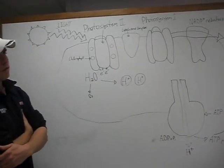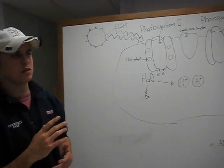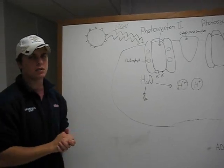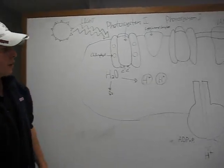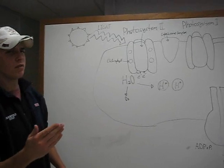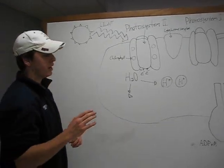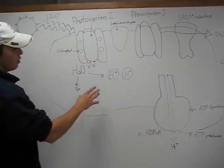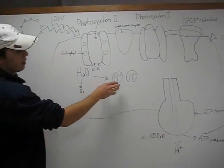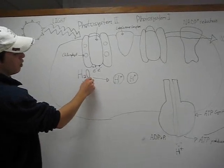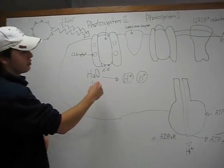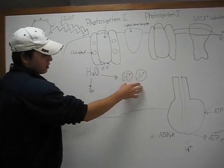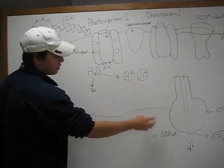NADPH is one of the forms of energy that are used for the dark reactions of photosynthesis. The other form of energy comes from ATP. ATP is created by setting up an H+ gradient from the H2O that was cleaved earlier in the process. This means there's more H+ inside the thylakoid than outside of it.